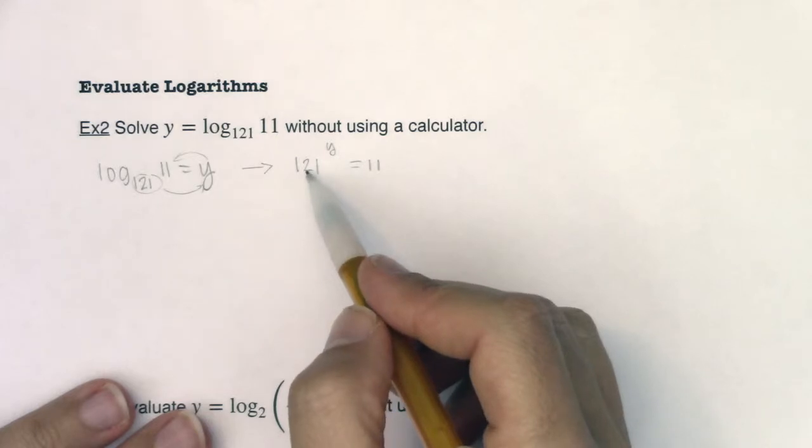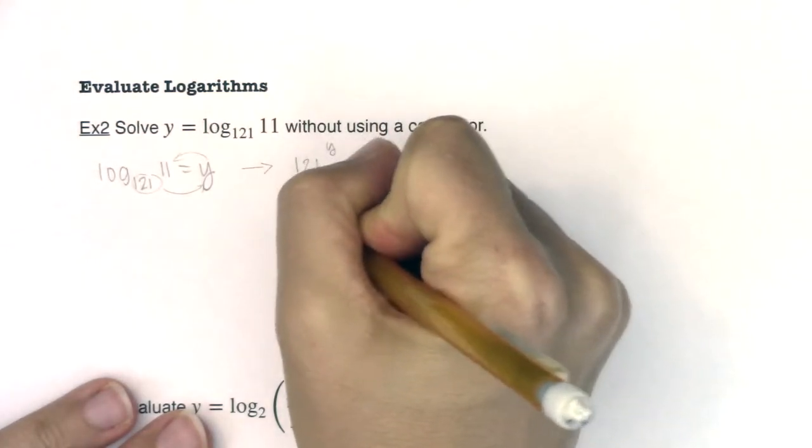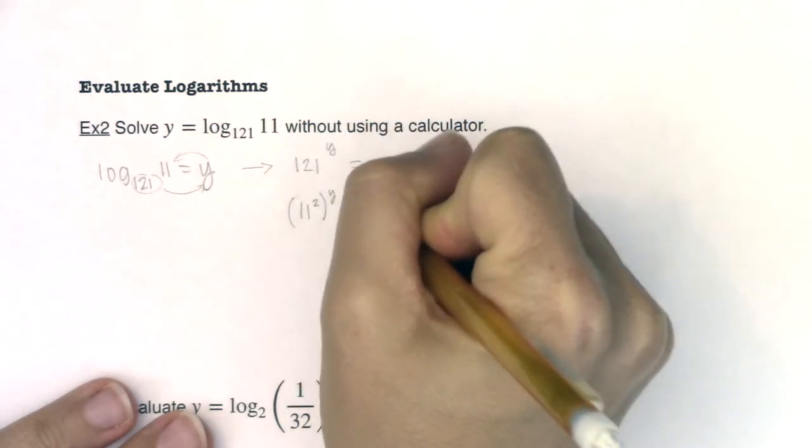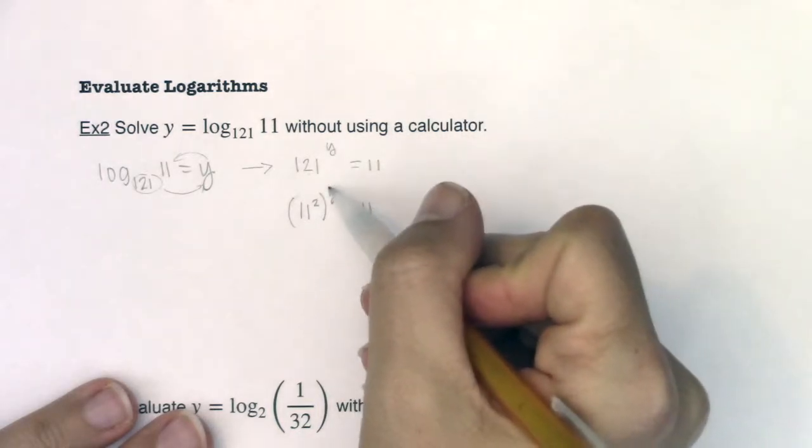Well, let's see what we remember about 121. I hope it's ringing a bell that 121 is 11 squared.